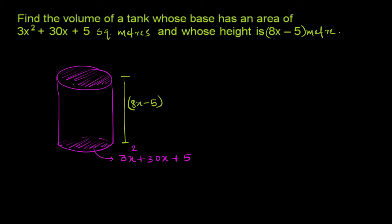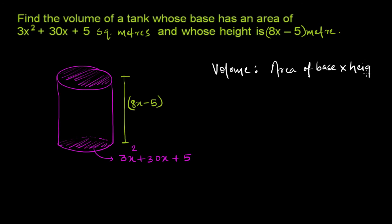We have been asked to find how much three-dimensional space this tank occupies — that is, the volume. For a cylindrical tank, volume equals base area times height. So we take the base area, which is 3x squared plus 30x plus 5, and multiply it by the height.